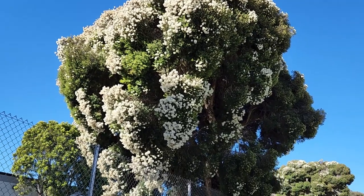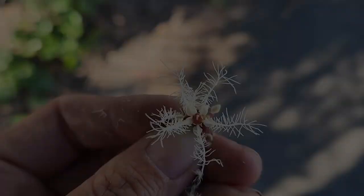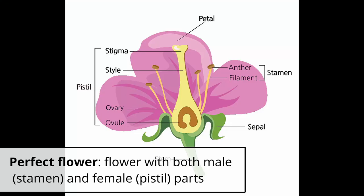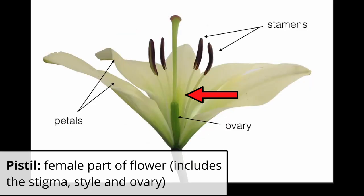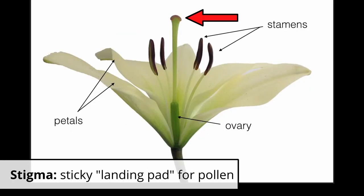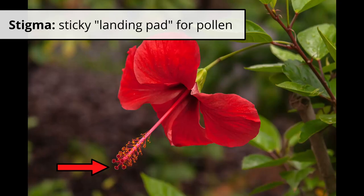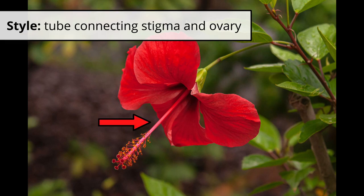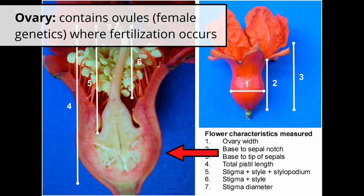There are a lot of different types of flowers, not just aesthetically or visually, but also structurally. To start, let's go over what makes up a perfect flower. A perfect flower has male and female parts. The female part is called the pistil, and the pistil has three main parts. At the very top is the stigma, which is like a sticky landing pad that the pollen falls on and sticks to. From there it goes down the style, which is a long tube that connects down to the ovary. The ovary is where the female genetics are contained. If the pollen can reach the ovary, fertilization happens.